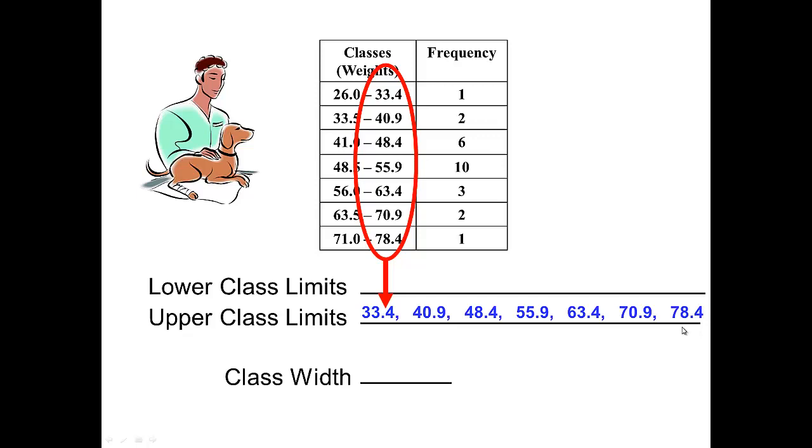And yes, I read those a little strange, but that was so the closed captioning gets that correct. And again, your teacher might ask what's the upper class limit of class 2, and that would be 40.9.